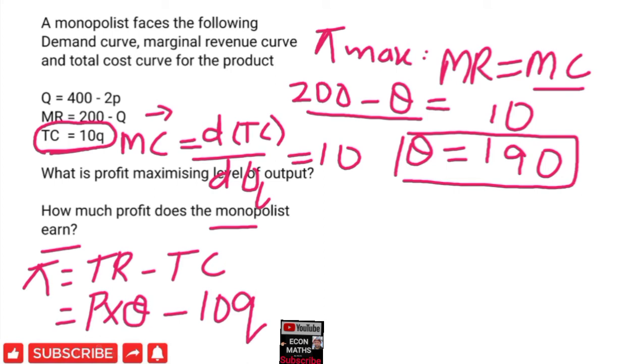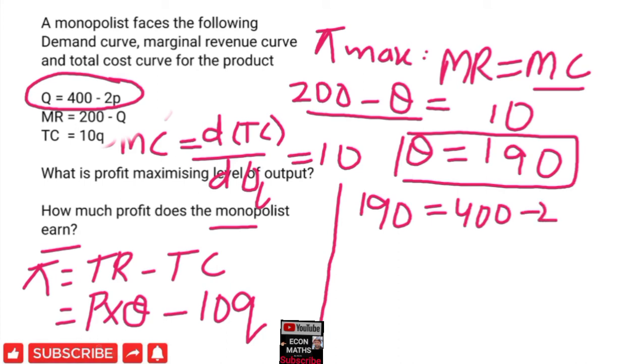We need to find the price first. We can find the price by solving the given demand function. We put the value of Q = 190 into the demand function: 190 = 400 - 2P. Solving this, 2P equals